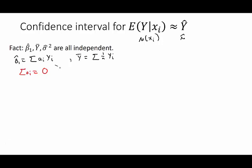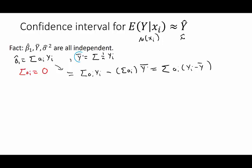The answer comes from the fact that the coefficients a_i in the expression for β̂₁ sum to zero — we showed that in the last video. Therefore we can add zero (written as the sum of a_i times ȳ) to our expression for β̂₁, factor out the a_i's, and get the sum of a_i times (y_i − ȳ). Since the sample mean and the deviations from that mean are independent — as shown two video series ago in normal inference — β̂₁ is defined in terms of quantities independent of ȳ, and is therefore itself independent of ȳ.